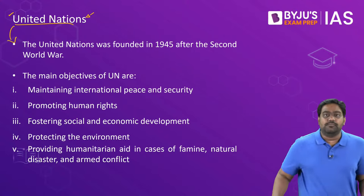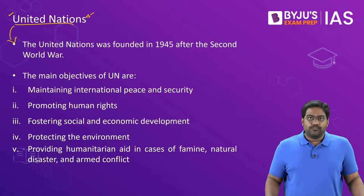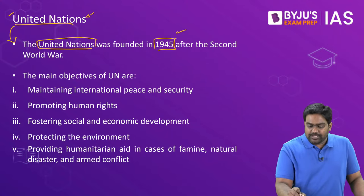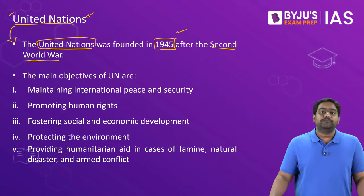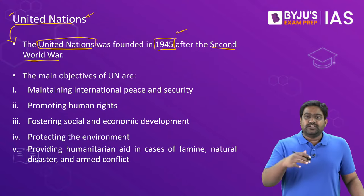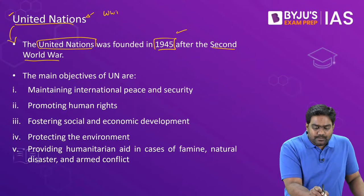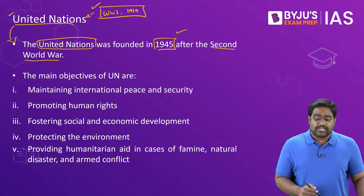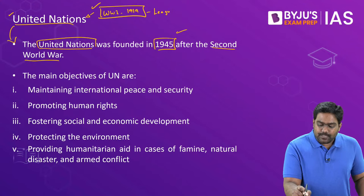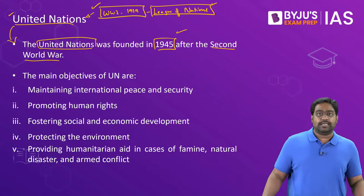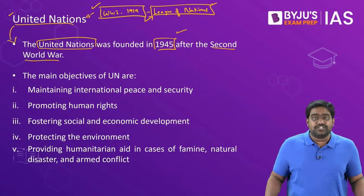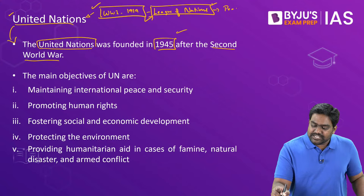So let's start by talking about the UN. The United Nations is an international organization which was founded in 1945, immediately after the Second World War. Before the Second World War, when the First World War had ended in 1919, one of the first global international organizations had been set up, known as the League of Nations. The First World War came to an end through the Treaty of Versailles, which was signed in Paris. Through this treaty, the League of Nations was set up as the first major international organization to promote peace and security in the world.